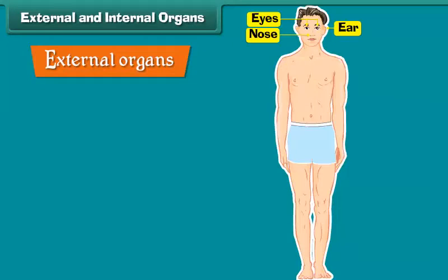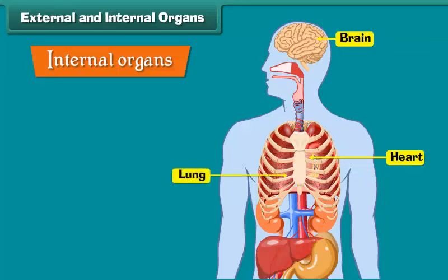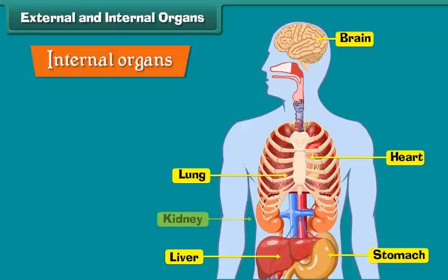The organs that cannot be seen from outside are called internal organs — for example, brain, heart, lungs, stomach, liver, kidneys, and bones.